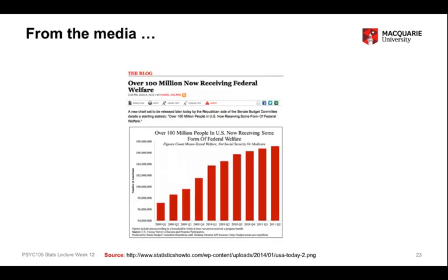This is a fairly well-known phenomenon. Here's another example from a media outlet, where it looks like there's been a fairly dramatic and consistent increase in the number of individuals in the US receiving some sort of welfare payment. What it hides is the fact that the graph starts on the vertical axis at $94 million and rises to $106 million over a period of several years. So the apparent magnitude of the increase is exaggerated by the structure of this graph.